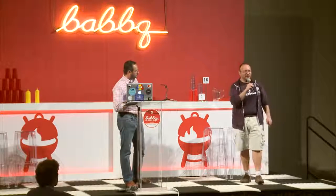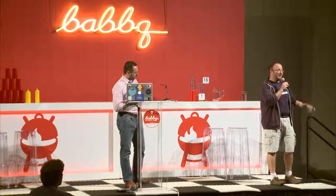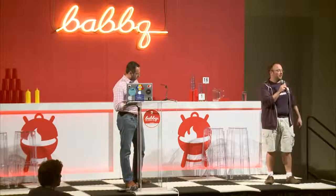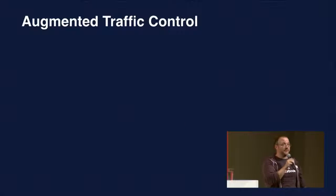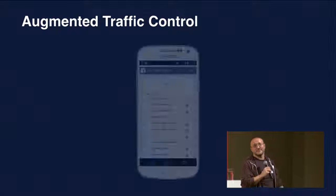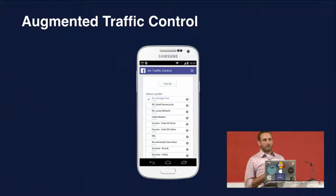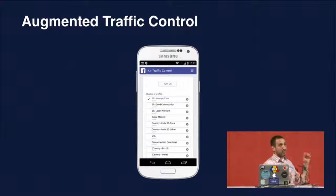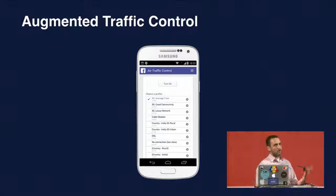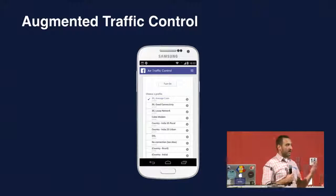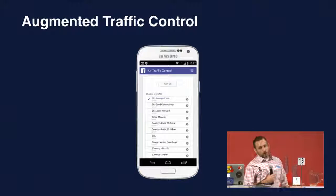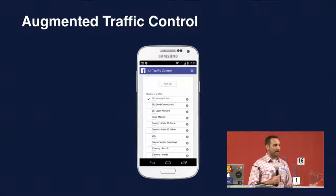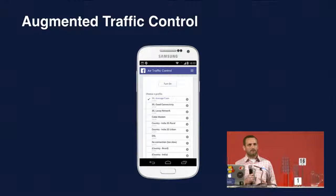Moving on to testing. How do we test for bad networks and how our apps work on bad networks? One of the things we built last year is called Augmented Traffic Control — a tool we've open sourced. It's a server you run on one of the computers in your office. All traffic from your app can go through it, and there are presets so you can see what your app feels like on 2G in rural India, or when there's a black hole and packets go out but nothing comes back. You can model latency, bandwidth, and intermittency.